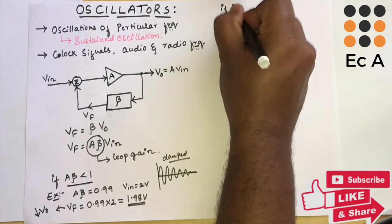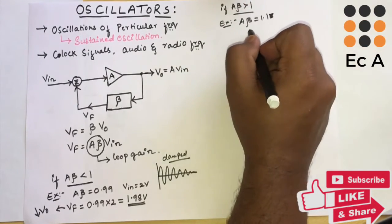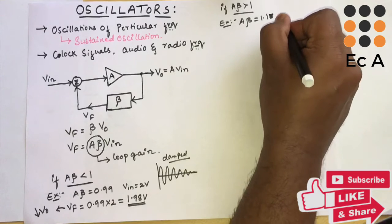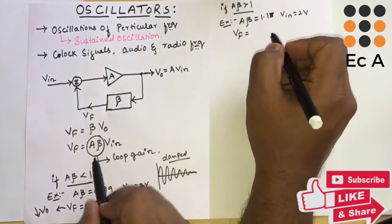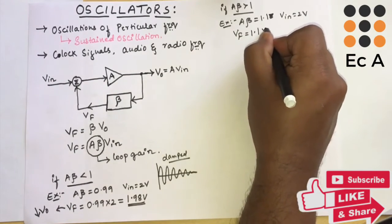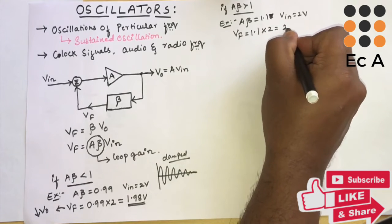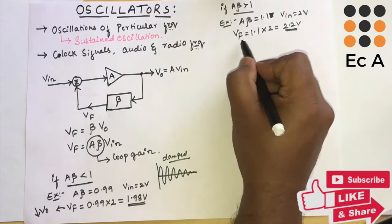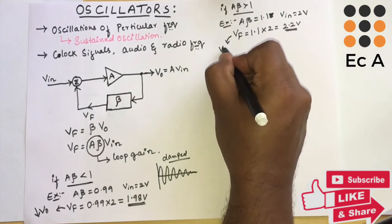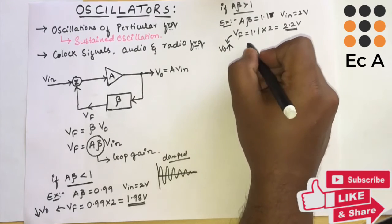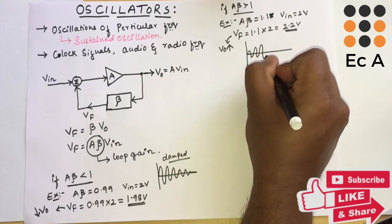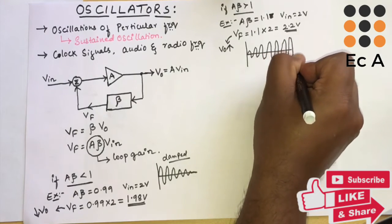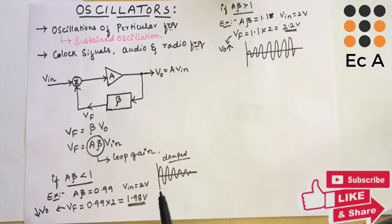If Aβ is greater than 1 — for example, if Aβ equals 1.1 and the input voltage is 2 volts — then Vf equals 1.1 × 2 = 2.2 volts. As you can see, Vf is increasing, so V0 will also increase. For this case we get an oscillation which is gradually increasing. From these two conditions we can easily understand that Aβ is very important in generating oscillations.